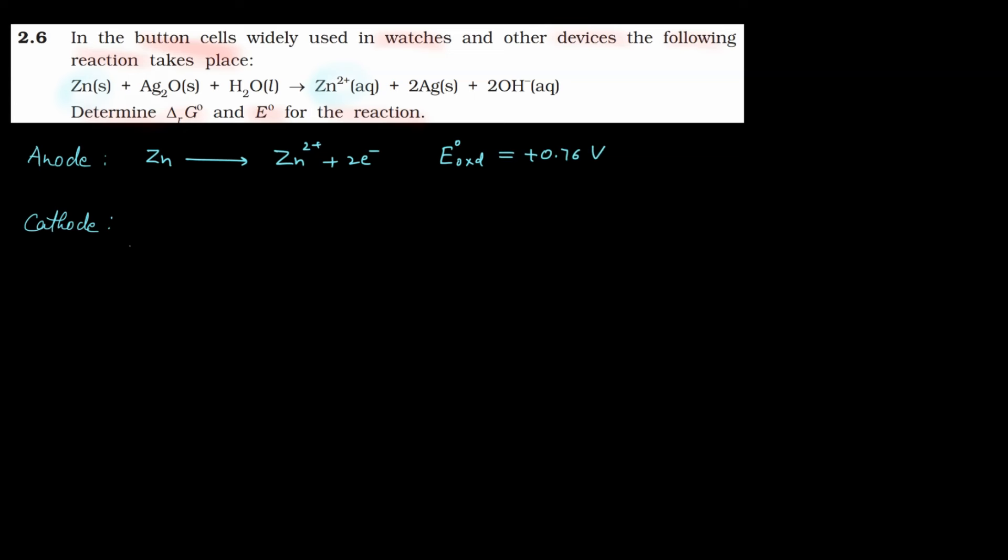And the reaction at cathode will be Ag₂O plus H₂O plus two electrons, because reduction will happen there, it will give you 2Ag plus 2OH⁻. If you add both these reactions, 2 electrons will cancel out and you'll get this overall reaction.